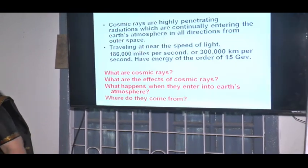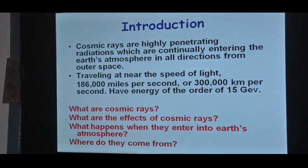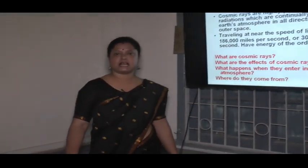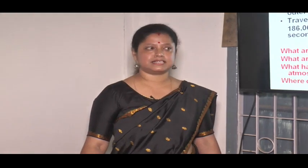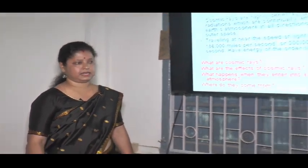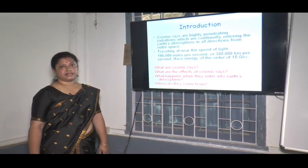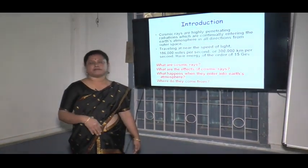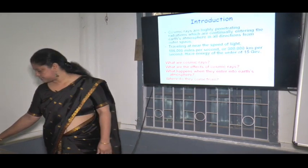What do you mean by cosmic rays? Cosmic rays are highly penetrating radiations which are continually entering Earth's atmosphere in all directions from outer space, with high velocity approximately equal to the velocity of light — 3×10⁸ meters per second — and have a great amount of energy of the order of 15 GeV. What are these cosmic rays? What are their effects? What happens when they enter our Earth's atmosphere and where do they come from? Today we will discuss all these queries.